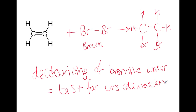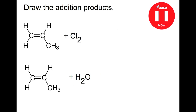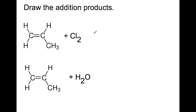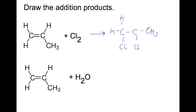The more bromine required, the more double bonds there must be within the molecule. Pause the video and draw the addition products for these two reactions. For the first reaction we're adding Cl2 — this is much like adding bromine. The double bond will break and we add the Cl2 across the double bond.